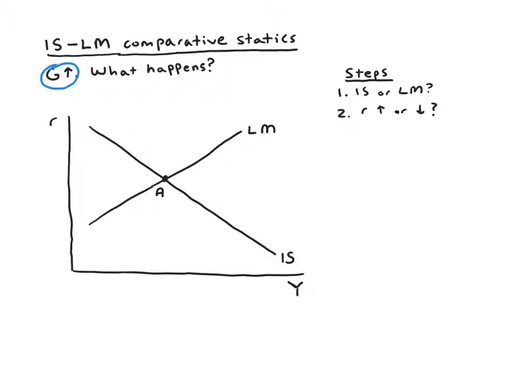The first step is to look at the event, government spending increasing, and say: Is this about IS, investment and savings, or is it about LM, liquidity and money? Theoretically it could be about both, but usually it'll be one or the other. If government spending increases, does that have something to do with investment or savings in the loanable funds market? Definitely, government spending is a big part of public savings. So we know this is going to affect savings. We should be expecting the IS curve to be affected.